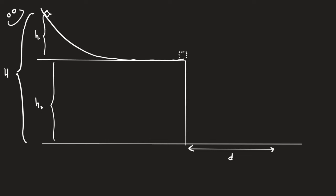A student releases a block of mass M from rest at the top of a slide at height H1. The block moves down the slide and off the end of a table at height H2, landing on the floor a horizontal distance D from the edge of the table. Friction and air resistance are negligible. The overall height is H, and the setup is determined by the height of the room.